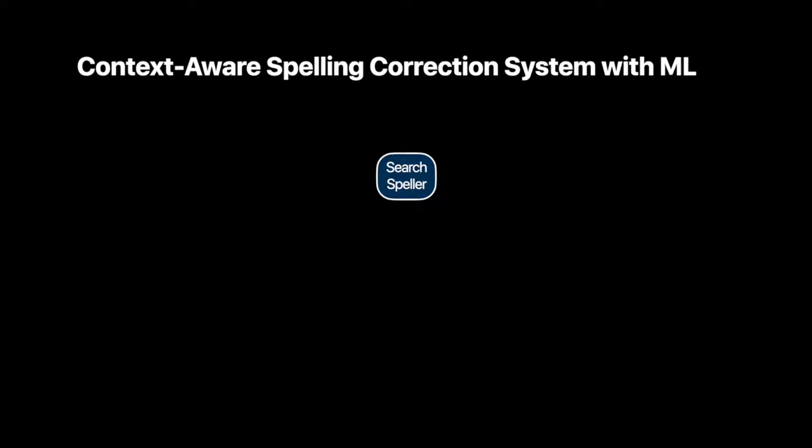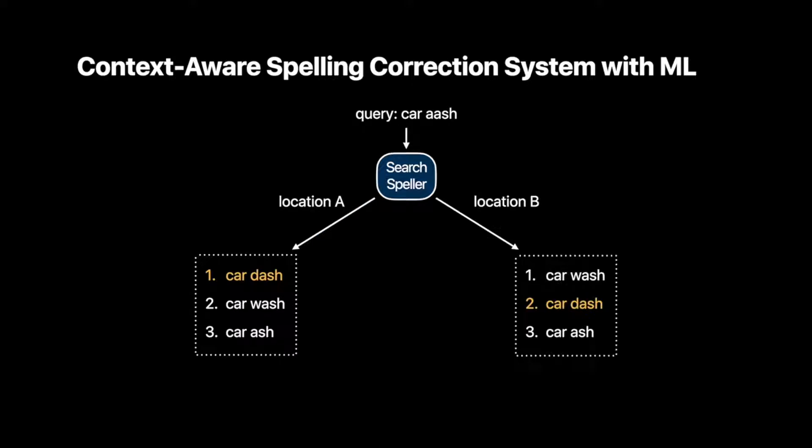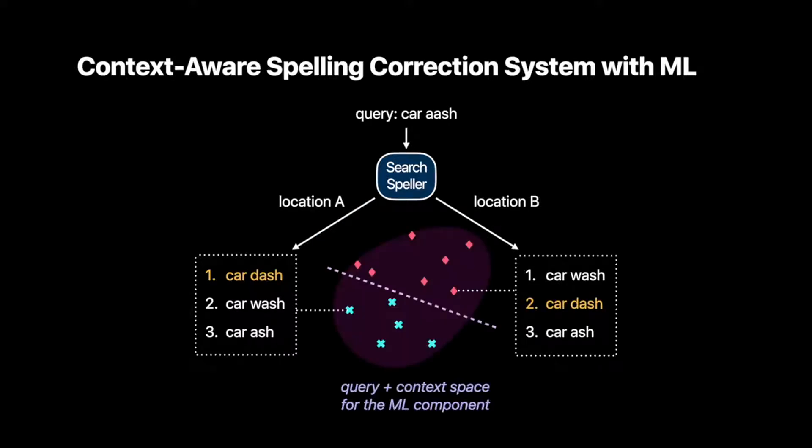Let's start with an example to illustrate. The Speller, or Spelling Correction system, is used in many modern search engines. Traditional Speller returns a string that corrects the spelling given the query alone, whereas context-aware spellers often contain machine learning components to handle additional contexts such as location, device settings, and user preferences.